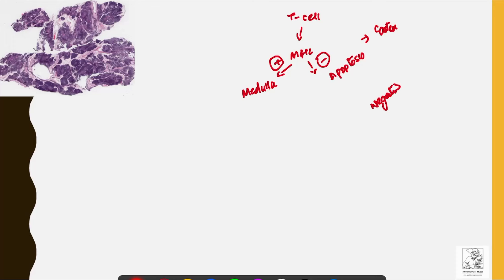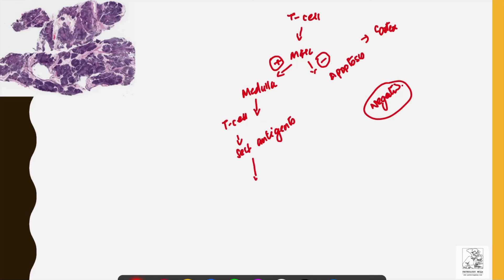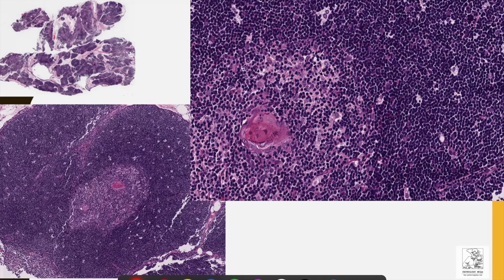Negative selection, which happens in the medulla, is very important in autoimmunity. T cells are exposed to self-antigens. If they are able to recognize these self-antigens, they undergo apoptosis to prevent autoimmunity. If they do not recognize these self-antigens, they go into the circulation and become part of the immune system. This is the basic regulatory mechanism happening in the cortex and medulla of the thymus.